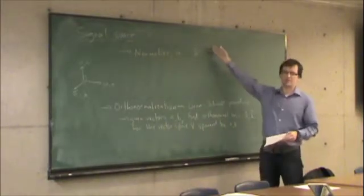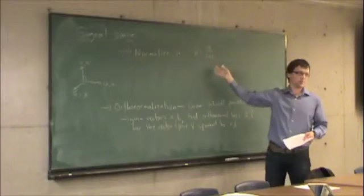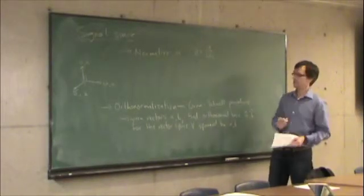So in other words, A has a certain length and we're going to divide all the components of A by its length, and that will shrink its length to 1.